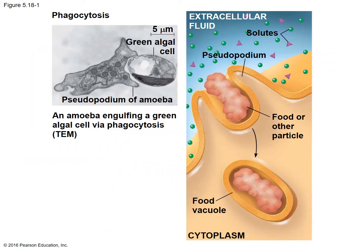Figure 5.18-1 is giving you a transmission electron microscope version of what's going on. They use an amoeba — notice that the foot part they point out is called the pseudopodium, or pseudopod — a false foot. It helps it to move around, but it's not working in the way that our feet work.